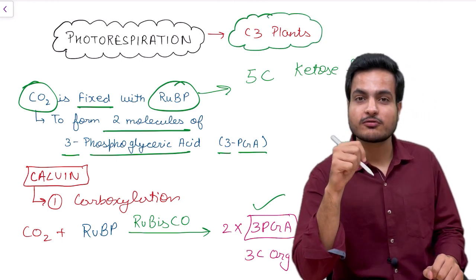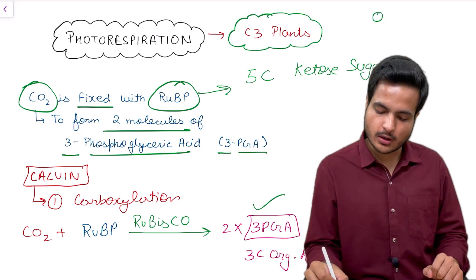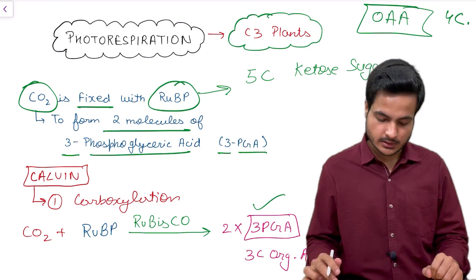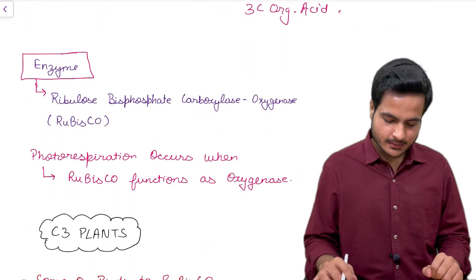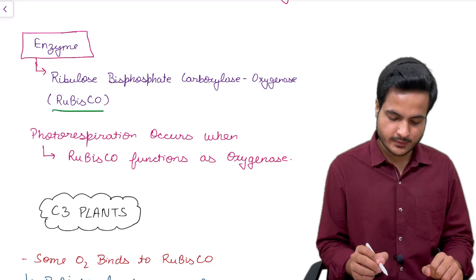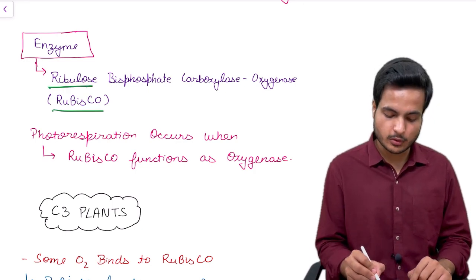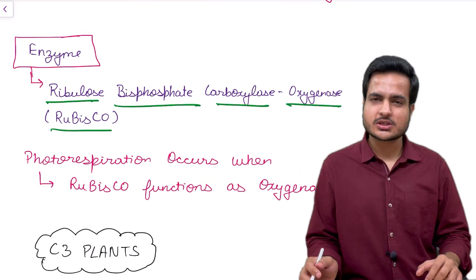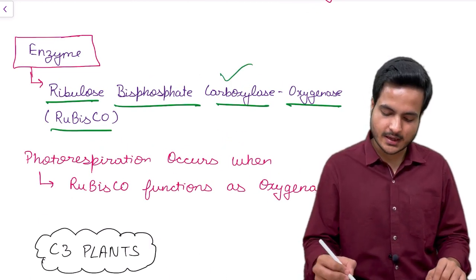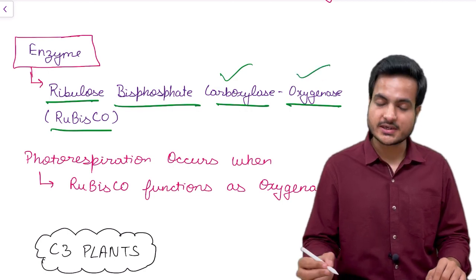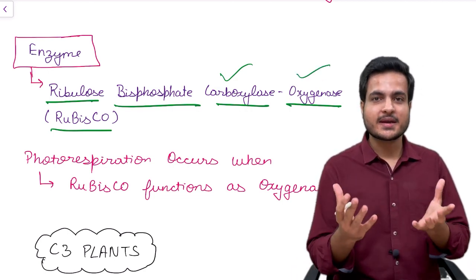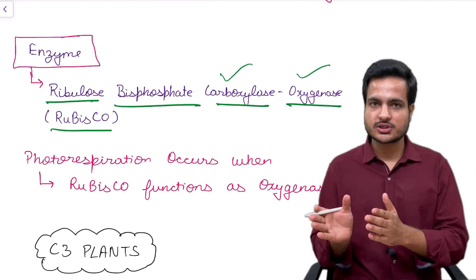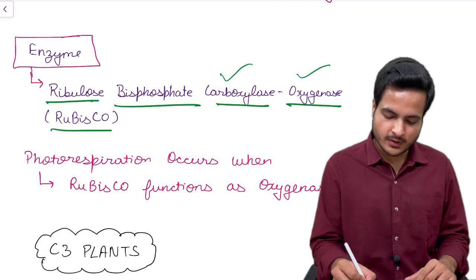The primary carbon dioxide fixation product of C4 plants is oxaloacetic acid (OAA), a 4-carbon containing organic acid. This reaction is catalyzed by RuBisCO — ribulose bisphosphate carboxylase oxygenase. This enzyme is special because it can function both as a carboxylase and as an oxygenase. The defining factor for which role it plays depends on the amounts of carbon dioxide or oxygen present in the surroundings.